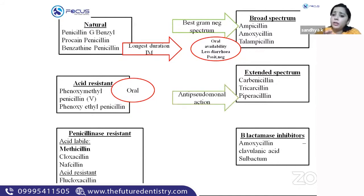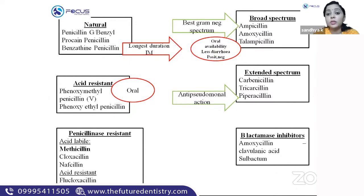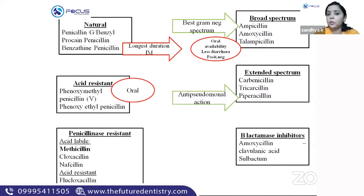Extended-spectrum penicillins include carbenicillin, ticarcillin, and piperacillin. They are effective against an extended range of organisms, including an additional organism — pseudomonas. Among them, piperacillin has the best anti-pseudomonal action.